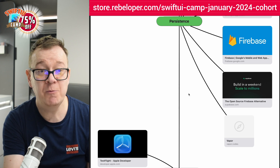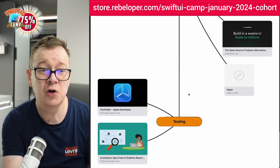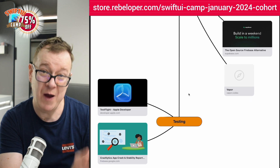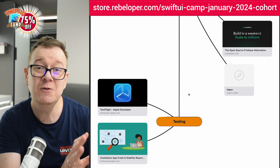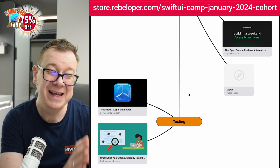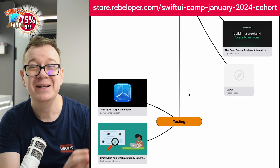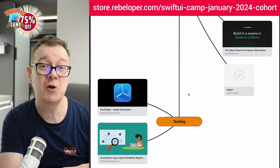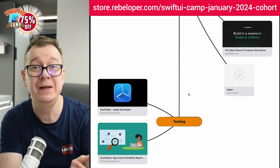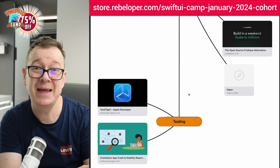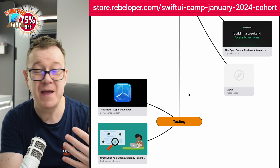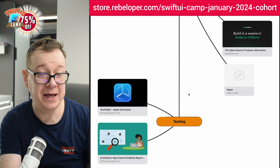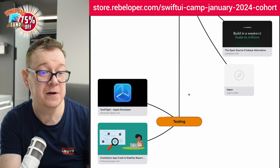And then there's Vapor. If you'd like to code only in Swift, Vapor is the way to go in terms of building out your own backend. The link is right in the resources.